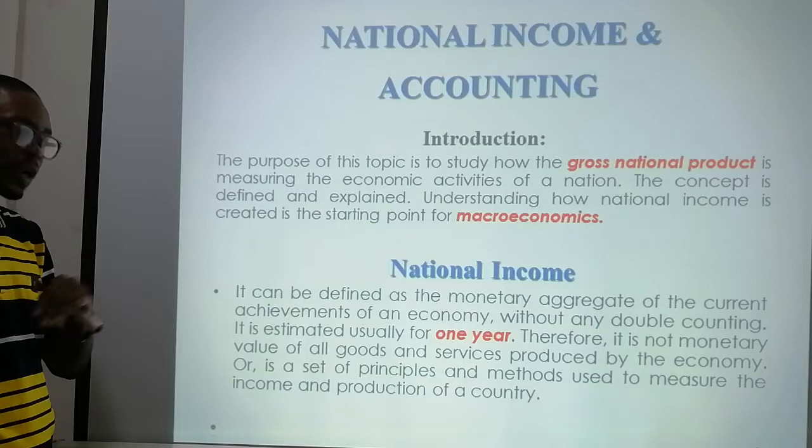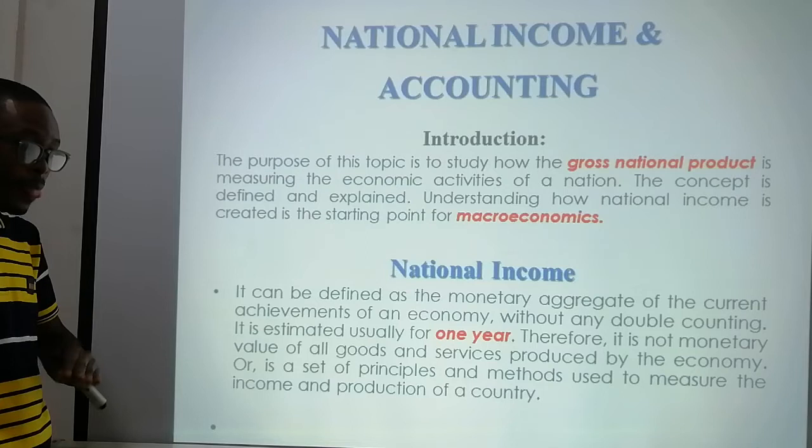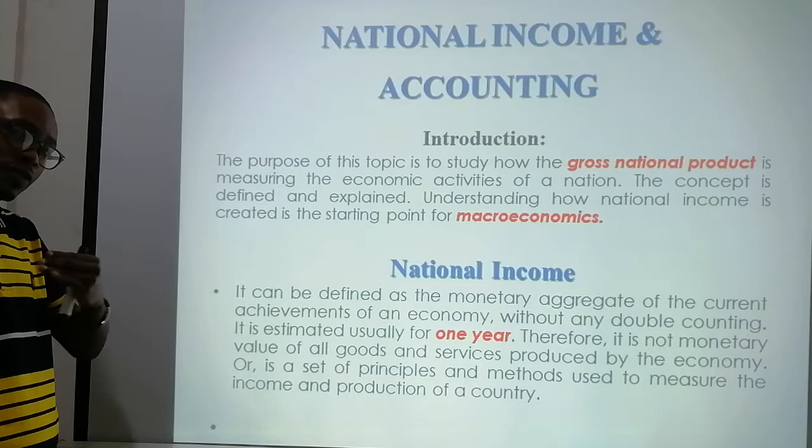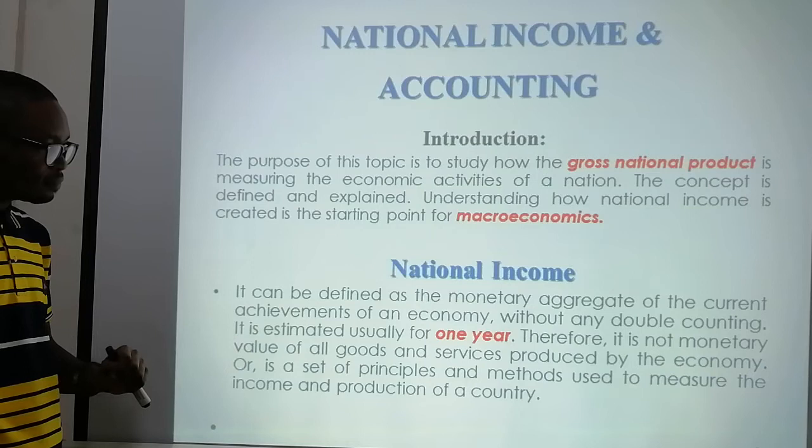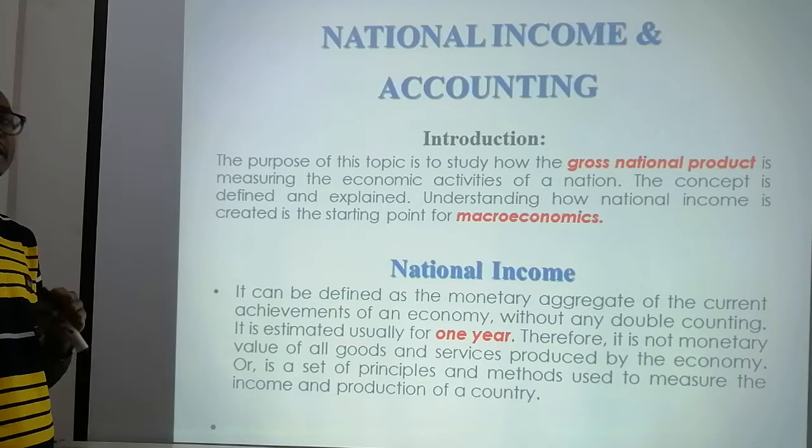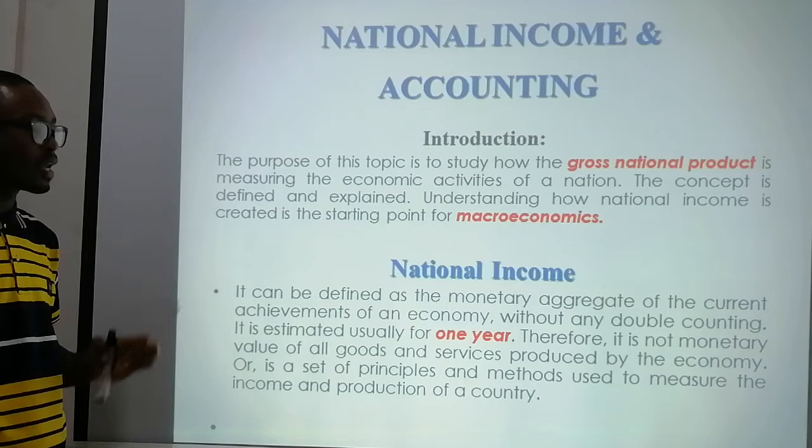National income can be defined as the monetary aggregate of the current achievement of an economy, without any double counting. This means counting the summation of goods and services within the economy without any double counting. It is estimated usually for one year.